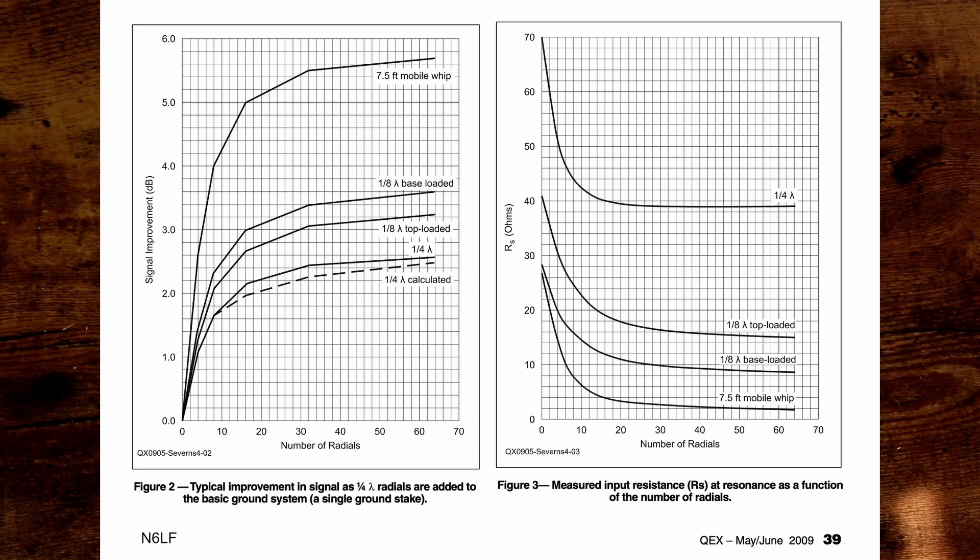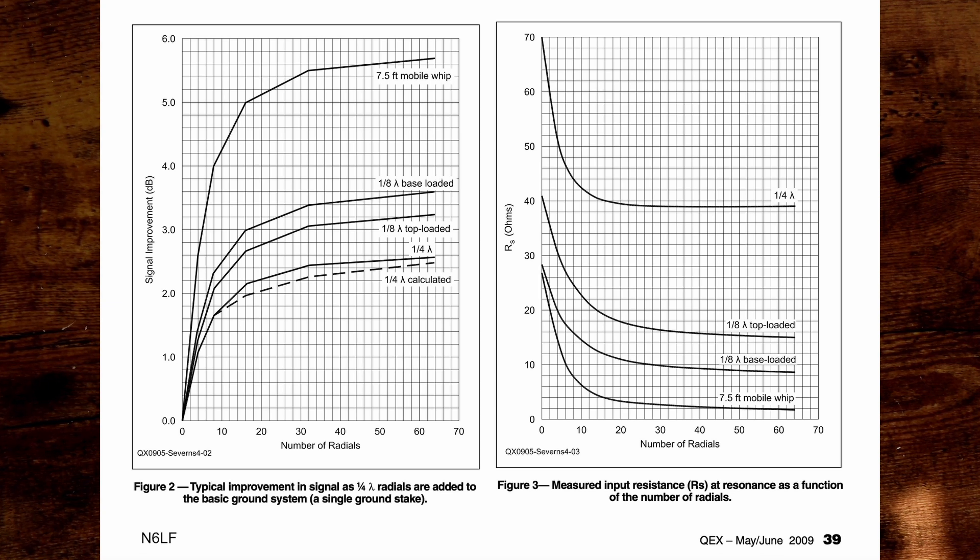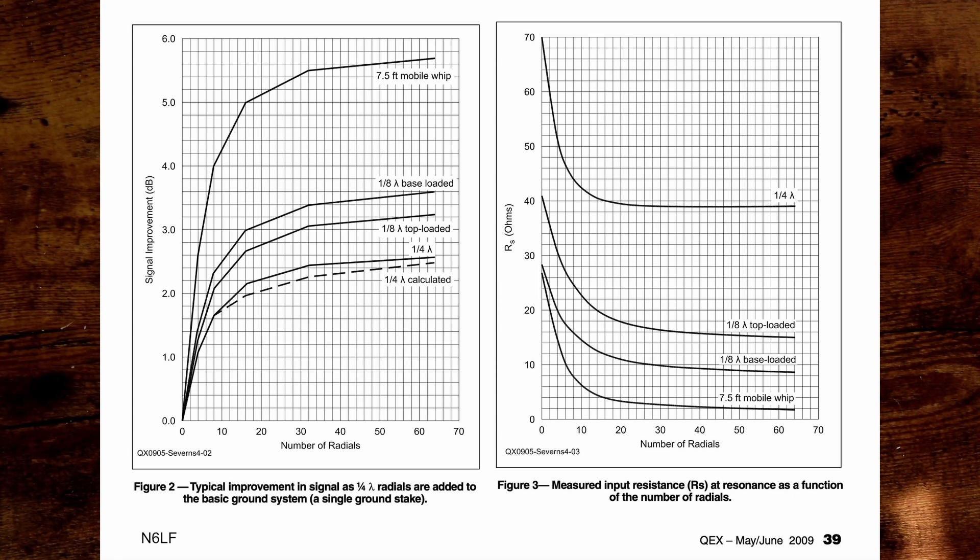And so, 10 radials at least is a good number to go with. If you can put 20, I think you're doing better, but it depends on how you deploy it and what your conditions are.